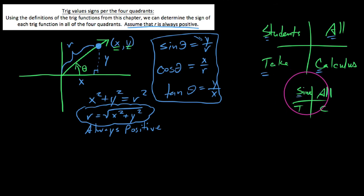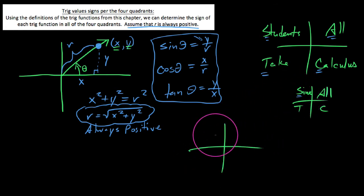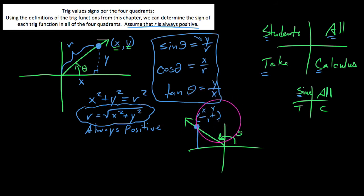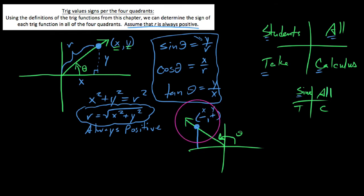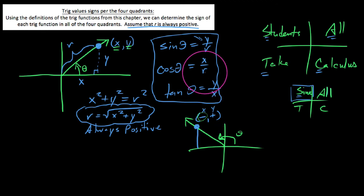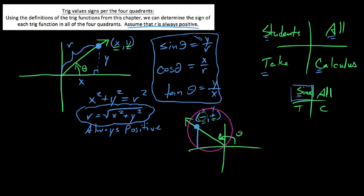In quadrant II, 'S' means sine is the only positive trig function. If an angle terminates in quadrant II, x is negative but y is positive. Sine is y over r — a positive y divided by a positive r gives a positive result. But cosine is x over r — a negative x divided by a positive r gives a negative. And tangent is y over x — a positive divided by a negative — also negative. So only sine is positive in quadrant II.